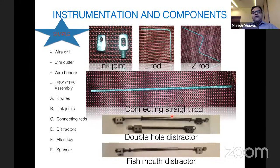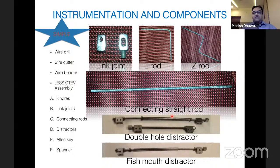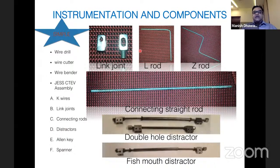The instrumentation is simple — everything is available in the OT: wire drill, wire cutter, wire bender. The JESS CTEV assembly includes K-wires of different diameters and lengths, link joints, connecting rods, Z and L rods, double-hole and fish-mouth distractors, Allen key and spanner. The set is available in small, medium, and large foot sizes. On the tibial side, the proximal tibia receives three wires: two horizontal and one anterior-posterior.